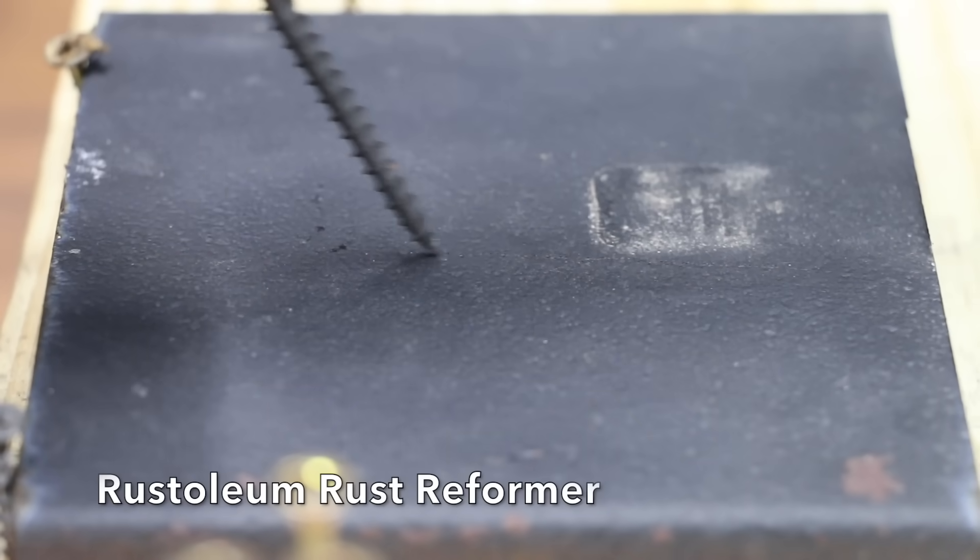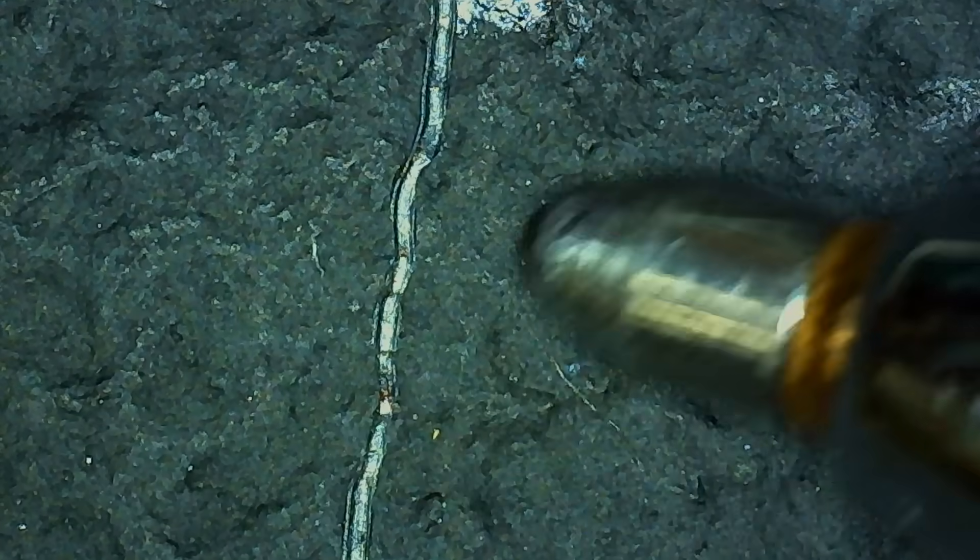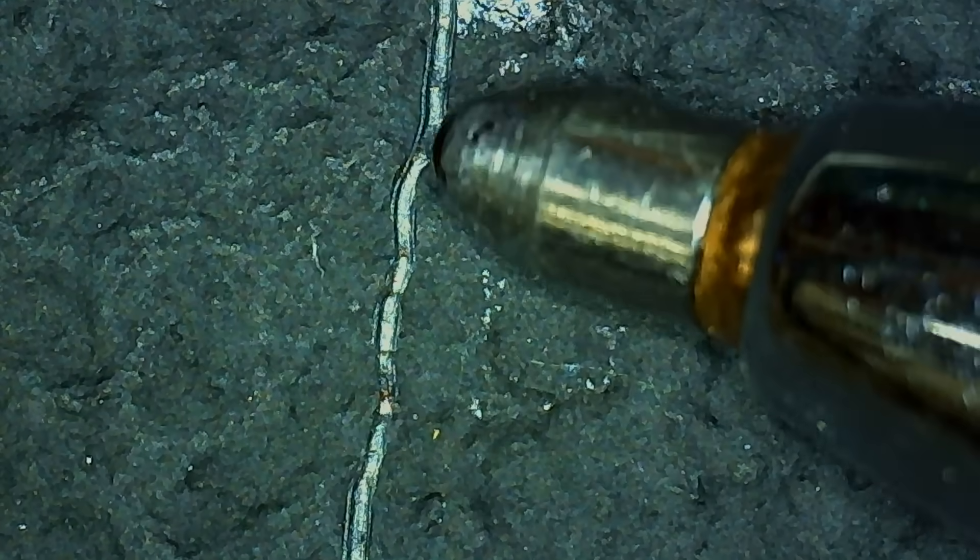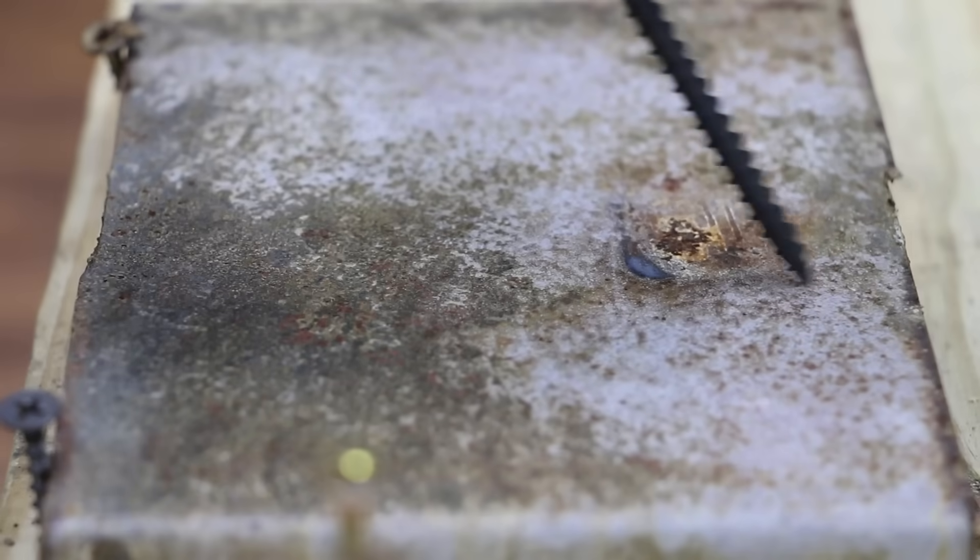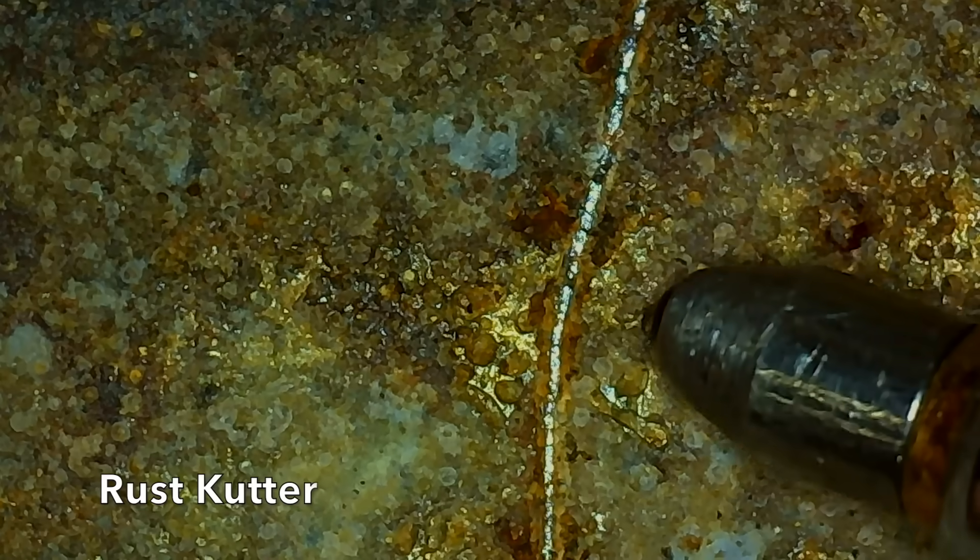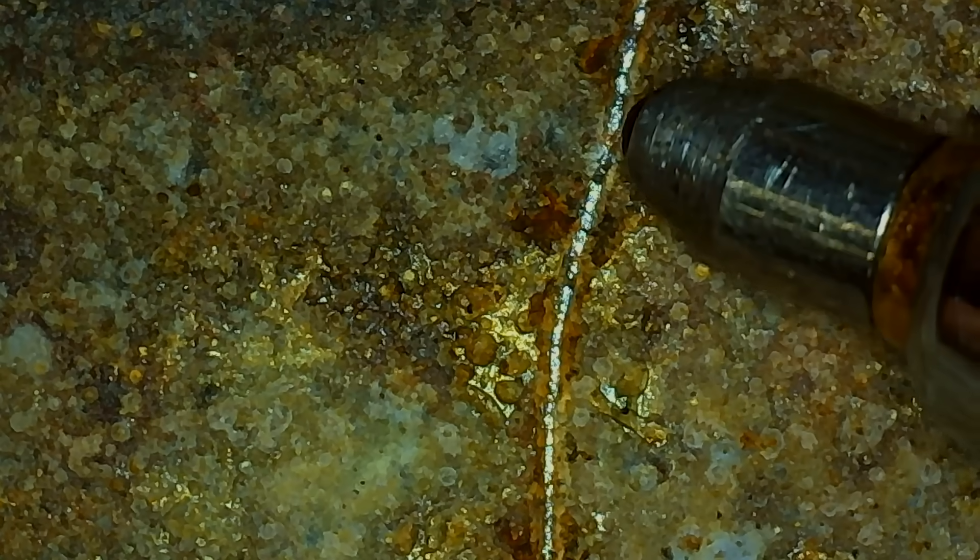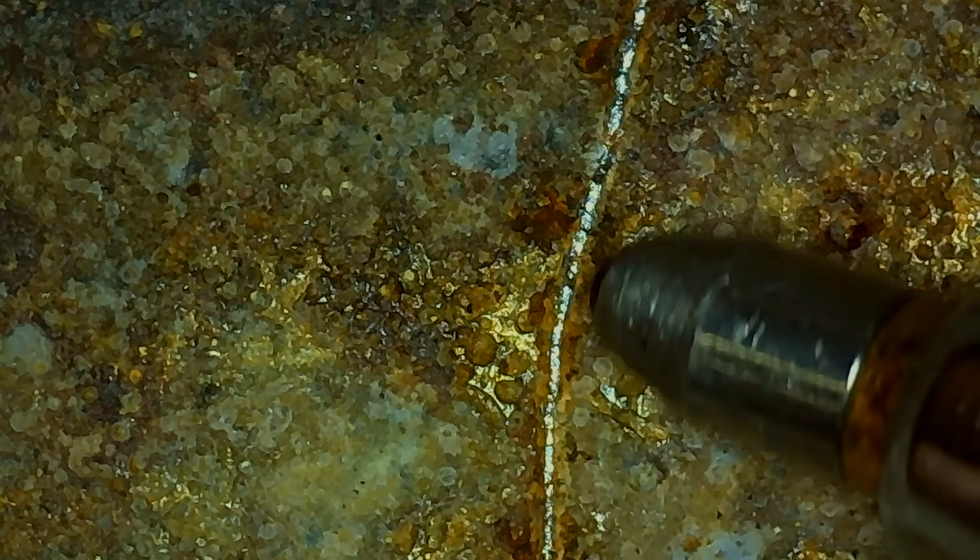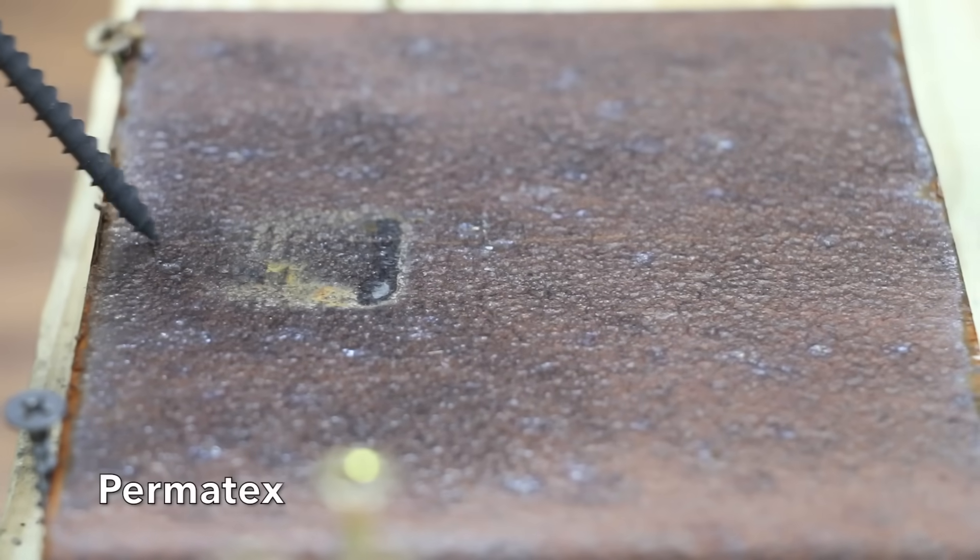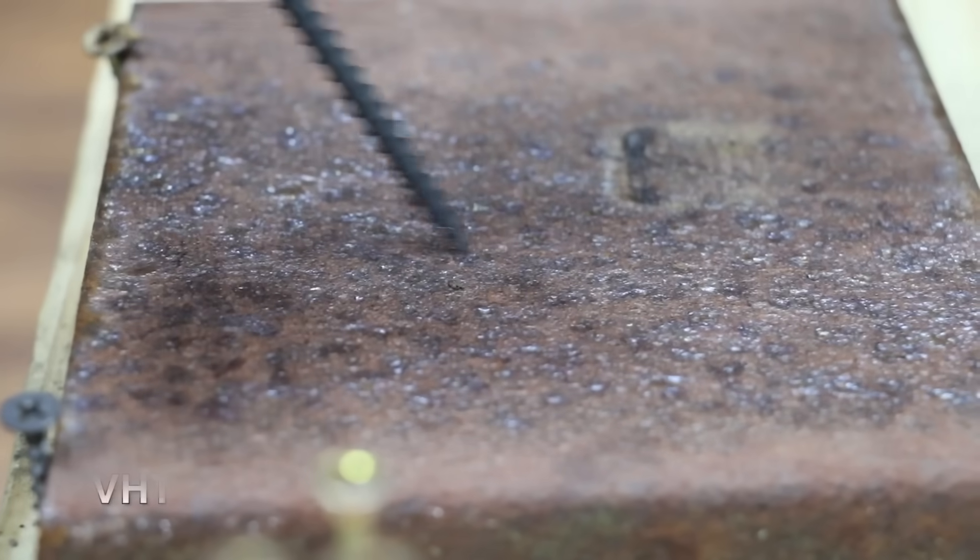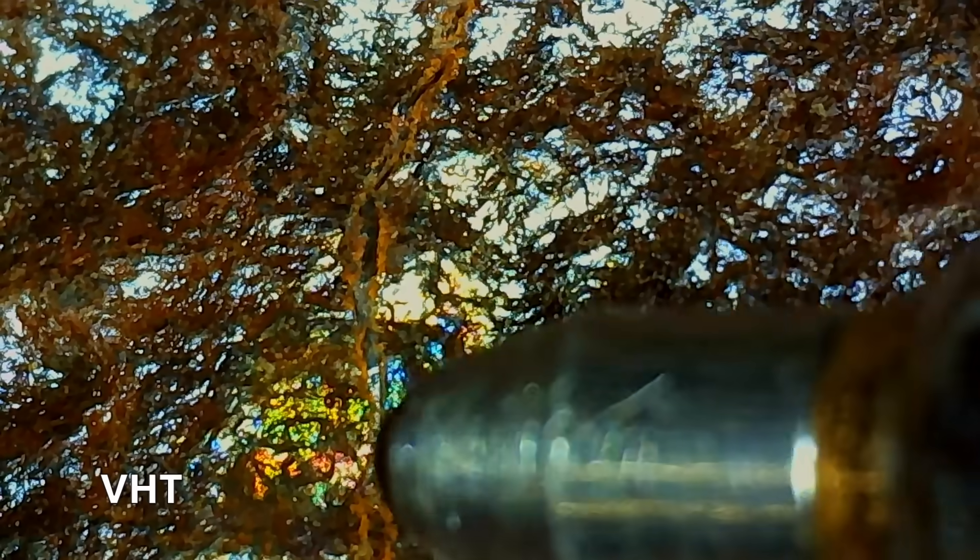The Rust-Oleum Rust Reformer actually did better than the Rust-Oleum 2X. It did go all the way down to the metal, but the paint did not chip. The Rust Reformer around the scratch area remained intact. Just like the Rust Reformer, the Rust Cutter also did about the same, did not fracture around the surrounding area of the scratch. Unfortunately, with the Permatex, there just didn't seem to be much of a coating to begin with, and unfortunately, the screw went all the way down to the metal.